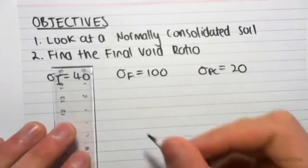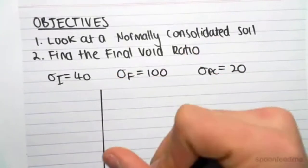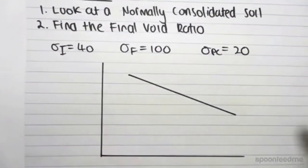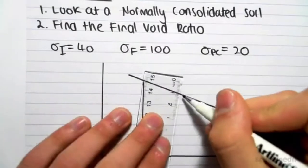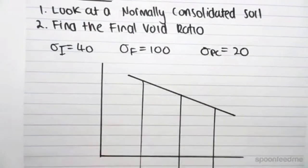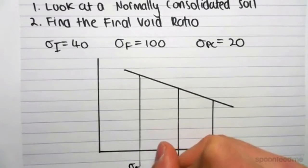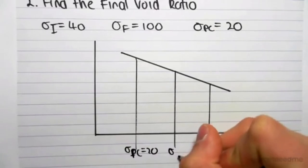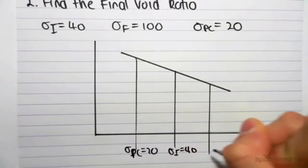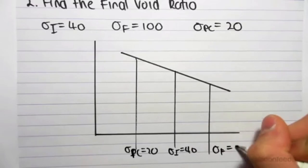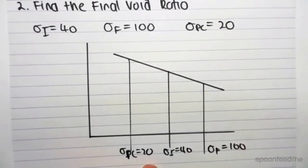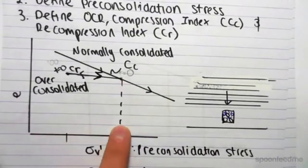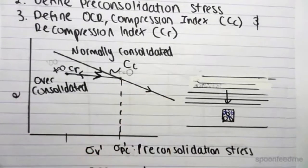So if I were to graph this, just like we did in the previous video, I would dash down all my points. Here's sigma pre-consolidated at 20, here's sigma initial at 40, and here's sigma final at 100. As you can see, we are along this point of the graph where the pre-consolidated stress is smaller compared to the initial and final stress we're experiencing.